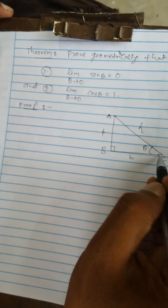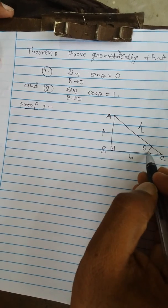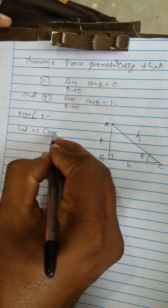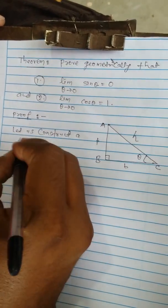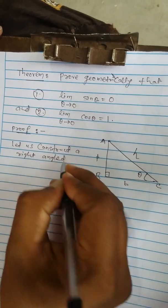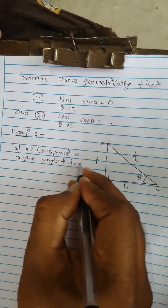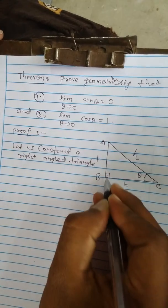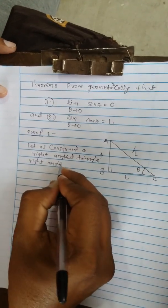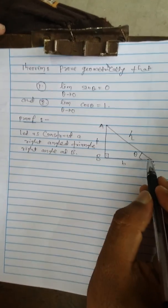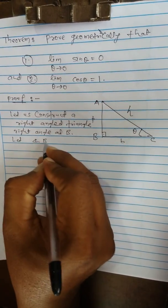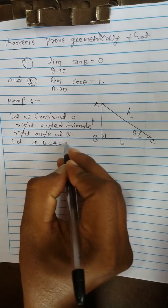Let us construct a right angle triangle, right angle at P, and consider angle C equal to theta. Let angle BCA equal to theta.